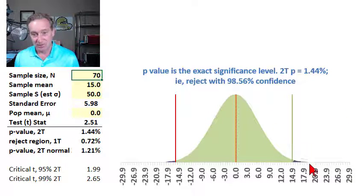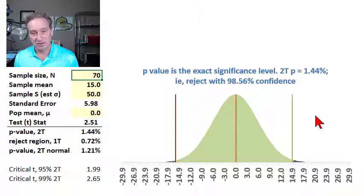the p-value is giving us the area in the rejection region or regions, and therefore, it's giving us the lowest significance level with which we could reject the null, or if we want,